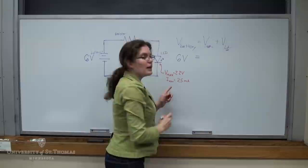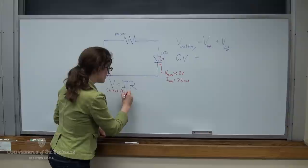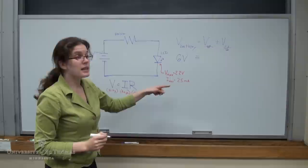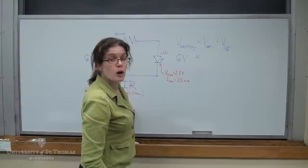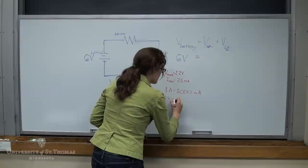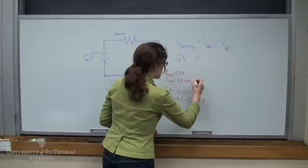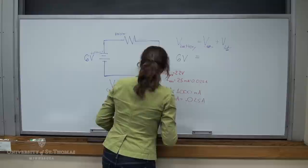Now, one note about milliamps here. We said for Ohm's Law, V equals IR, that V was in volts, the current was in amps, and the resistance was in ohms. So if you ever have a specification sheet that gives you the current in milliamps, they probably will for LEDs, be sure to convert that into amps when you're using Ohm's Law. So let's convert that. We know that 1 amp is equal to 1,000 milliamps. So 25 milliamps is going to be equal to 0.025 amps, or 25 thousandths of an amp. So 0.025 amps.